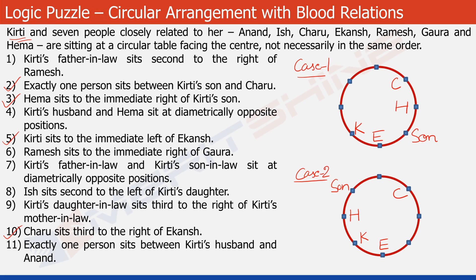Look at statement 4 now. It says that Kirti's husband and Hema sit at diametrically opposite positions. In Case 1, this is Hema, so the position of Kirti's husband should be this one — let's write husband here. In Case 2, this is Hema, so the position of Kirti's husband would be this one — let's write husband here as well.